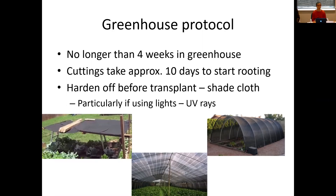For cuttings or clones, it takes approximately 8 to 10 days to start putting out a root from the cutting. Whether it's seedlings started from seed or from clones, you need to harden them off before you transplant — similar to many other transplants. If you're a vegetable farmer or doing anything like that — tobacco — you can't just take a plant from a nice protective climate with optimal light and temperature and throw it out in the field without issues.